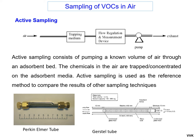For quantitative measurement of VOCs, a suitable sampling and analytical technique is needed, as compounds with different functional groups belong to this group. Sampling of VOCs is usually done by active sampling, grab sampling, and passive sampling techniques. Active sampling consists of pumping a known volume of air through an adsorbent bed, where chemicals in the air are trapped or concentrated on the adsorbent media. Active sampling is used as the reference method to compare results of other techniques. Samplers used include the Perkin-Elmer sampler, Gerstel tube, and charcoal tube.